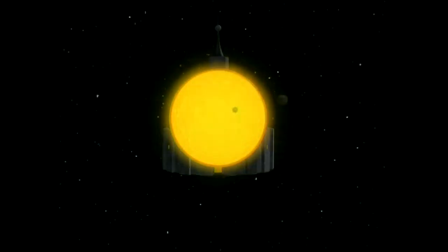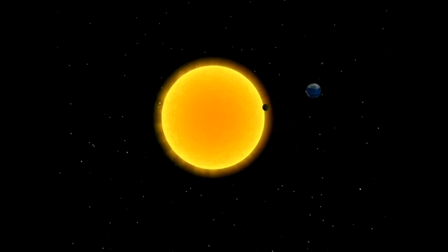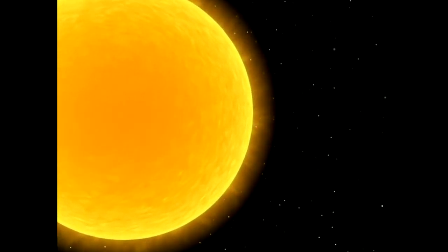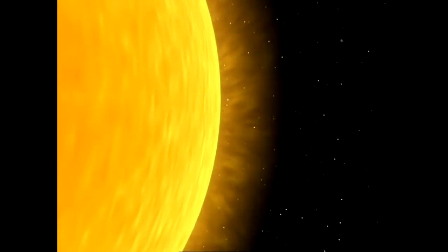All the planets, Earth included, represent only a thousandth of its mass. What we call the solar system turns out to be the sun and a few pebbles.